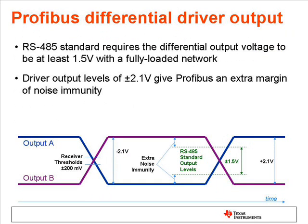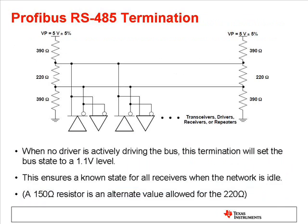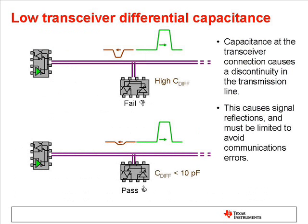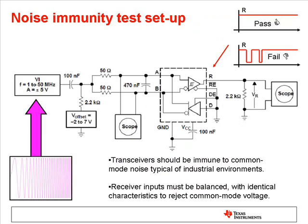The differential output voltage capability should be 2.1 volts, somewhat higher than the standard RS-485 level of 1.5 volts. The PROFIBUS termination uses bias resistors to set the default bus levels to a known state. The differential capacitance of a PROFIBUS transceiver should be minimized, less than 10 pF, to reduce the discontinuity of the transmission line. The common mode noise immunity should be specified to reduce any effect from spurious electrical pulses in the network.